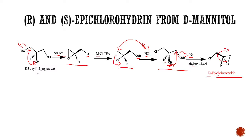You can see here the first priority, second priority, and third priority, so it is nothing but R-epichlorohydrin. This is how we are going to prepare R-epichlorohydrin. As I already told you, 'epi' means epoxide, so epichlorohydrin.